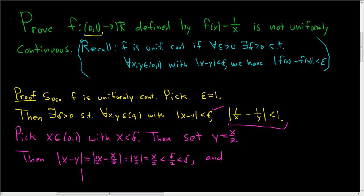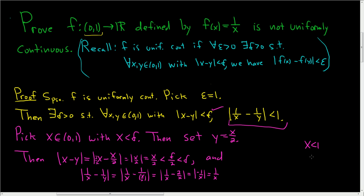Now let's look at |1/x − 1/y|. This is |1/x − 1/(x/2)| = |1/x − 2/x| = |−1/x| = 1/x. And since x is in (0, 1), x is less than 1, so 1/x is greater than 1. So this quantity is greater than 1 — a contradiction.